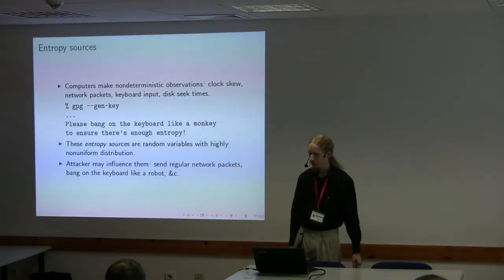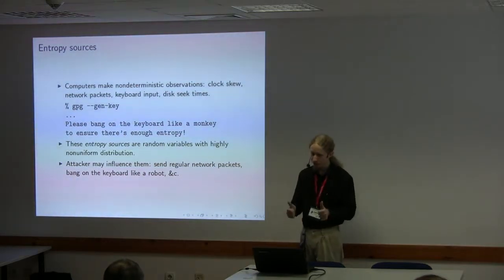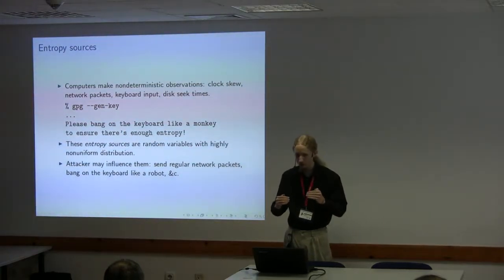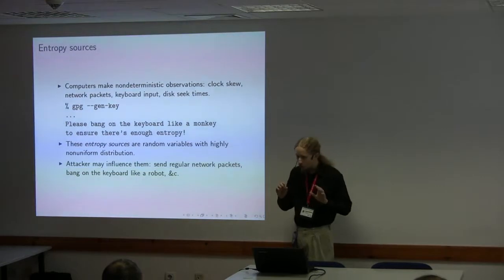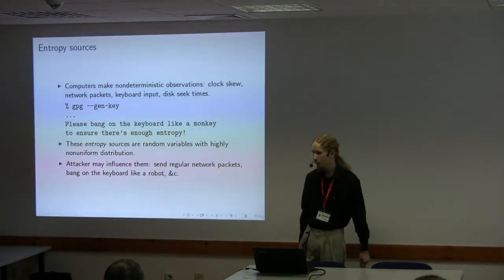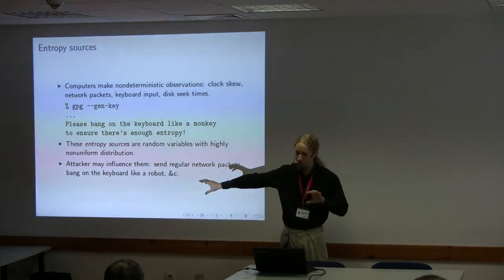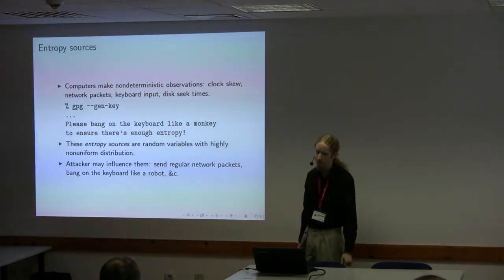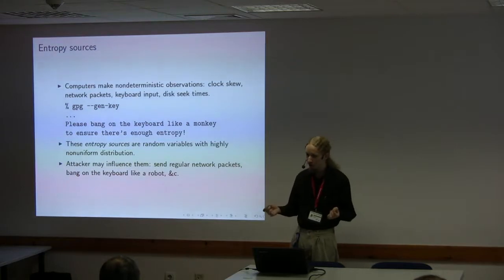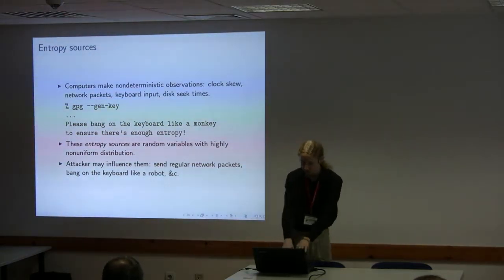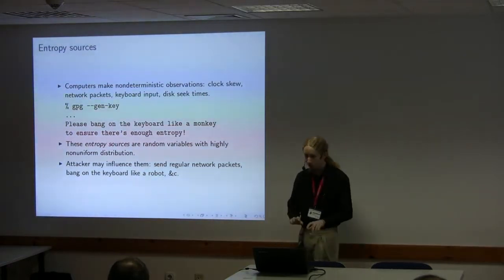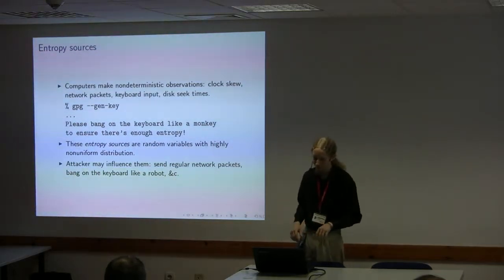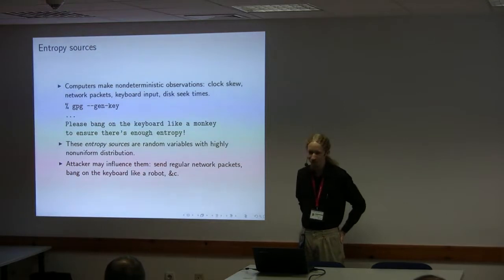For example, computers usually have more than one clock in them, and two clocks are never quite synchronized right. So if you look at the skew between the two clocks, that may be a little bit hard to predict if you're not actually observing the clocks yourself. If you are an attacker on the other end of the Ethernet cable, it may be hard for you to observe the two oscillators inside the computer you're trying to attack. Other possibilities are the timings of network packets or keyboard input - how far apart my keystrokes are and which keys I'm hitting. If you run gpg-genkey to produce a new key, it'll print out a message asking you to bang on the keyboard like a monkey until it has enough entropy to generate the key.